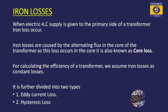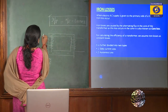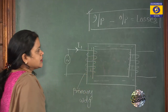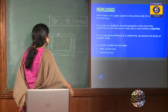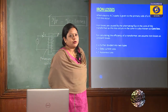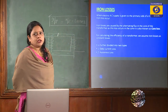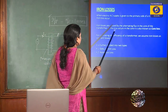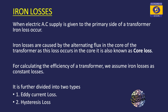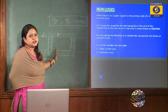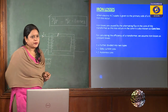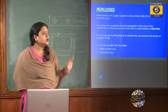When AC supply is given to the primary side of the transformer, iron loss occurs. When AC supply is given to the primary winding of the transformer, there occurs alternating magnetic flux in the core. Due to this magnetic flux, there occurs iron loss in the core of the transformer. Iron losses are caused by the alternating flux in the core of the transformer. As these losses occur in the core, they are also known as core losses. For calculating the efficiency of the transformer, we use iron loss.